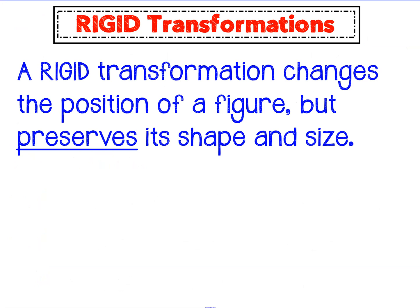A rigid transformation changes the position of a figure, but preserves its shape and size. I've underlined that word preserves because that's important. You might understand this vocabulary word by something you already know, like preservatives or raspberry preserves, right? A preservative is something added to food that keeps it the same so it doesn't go bad. To preserve means to keep the same.